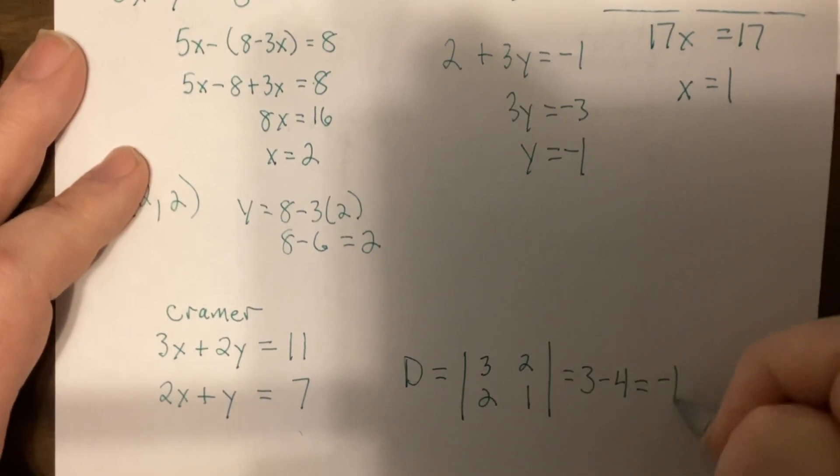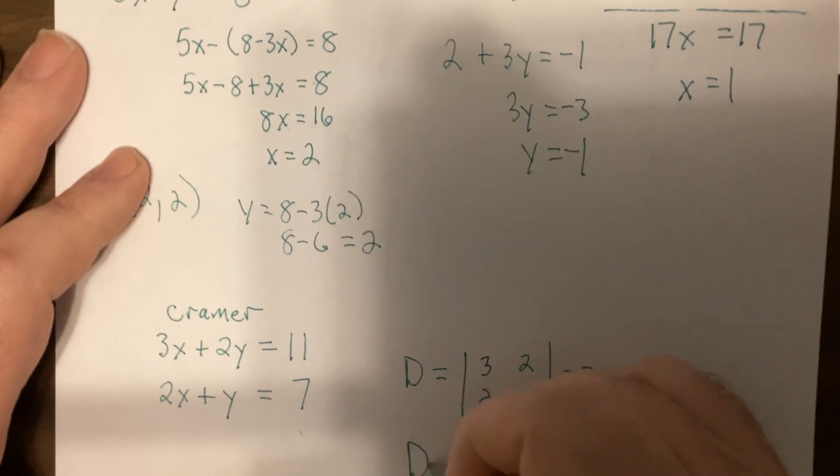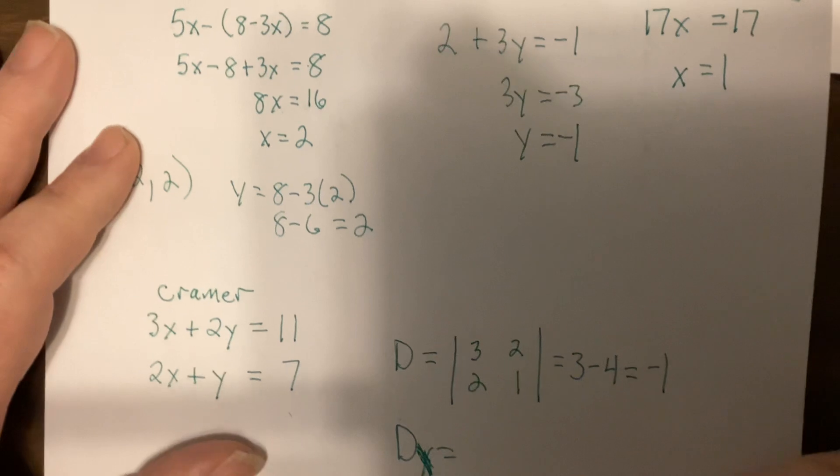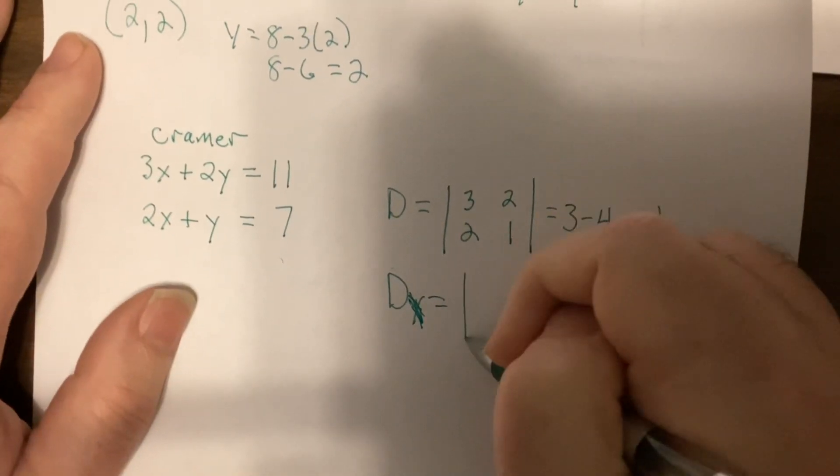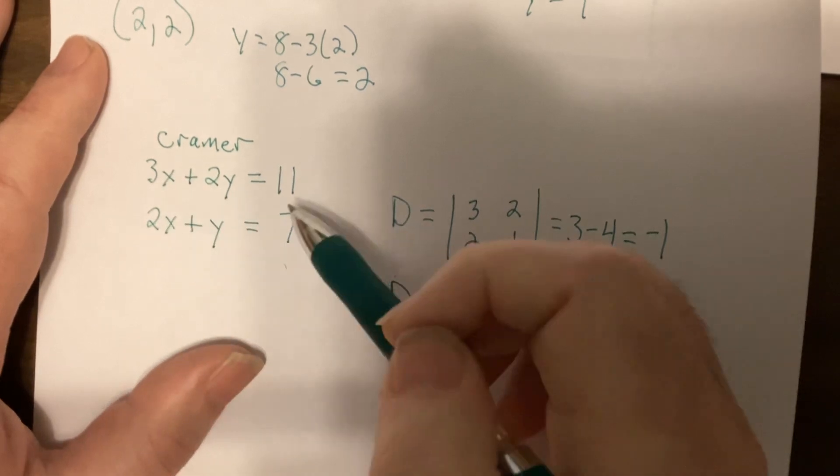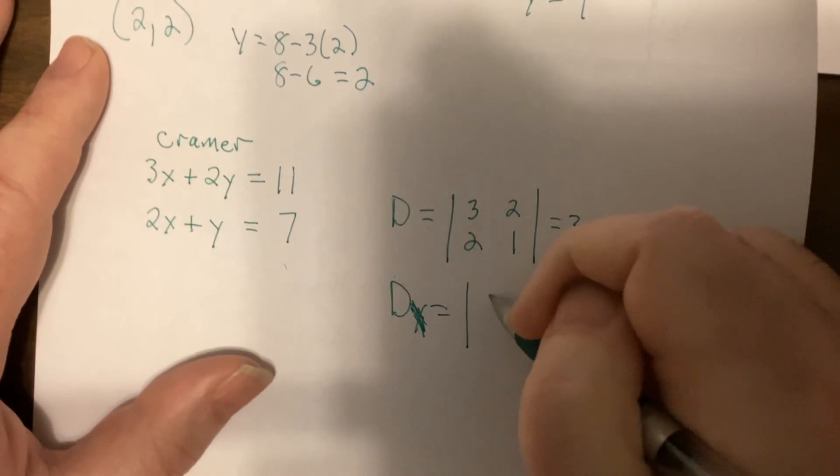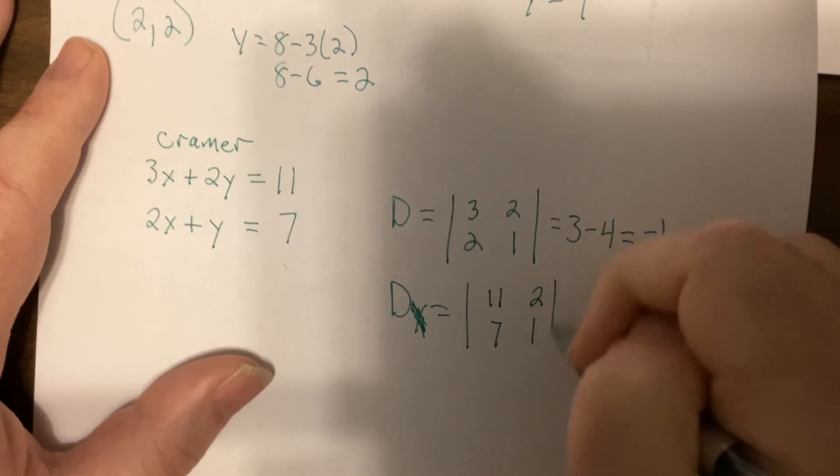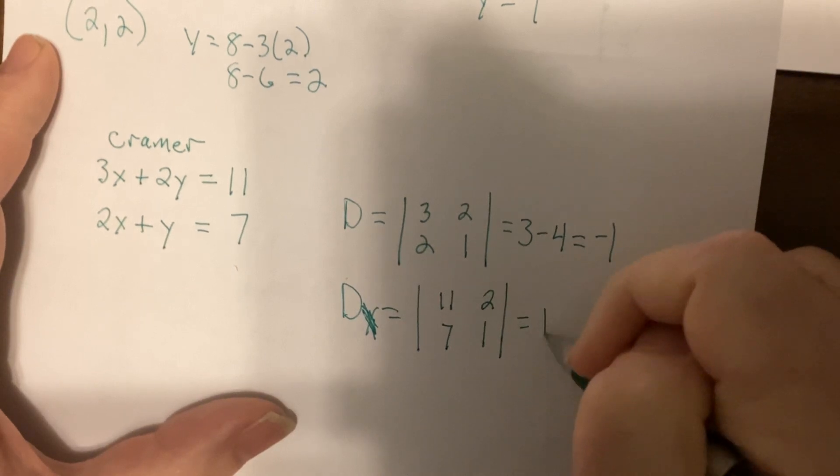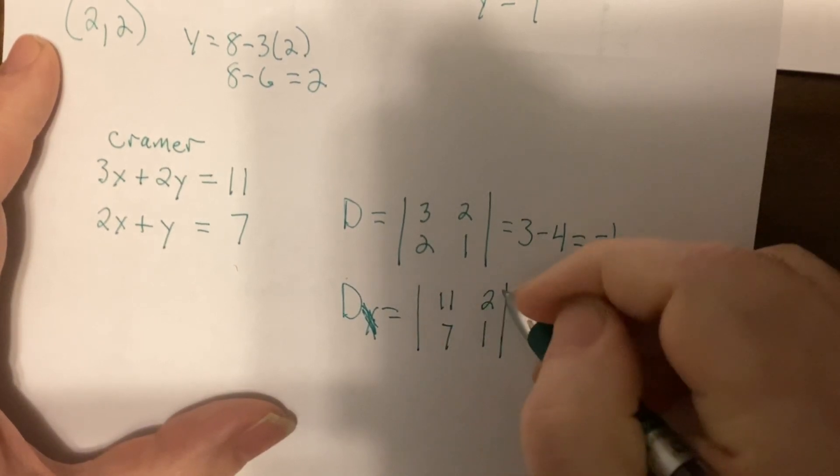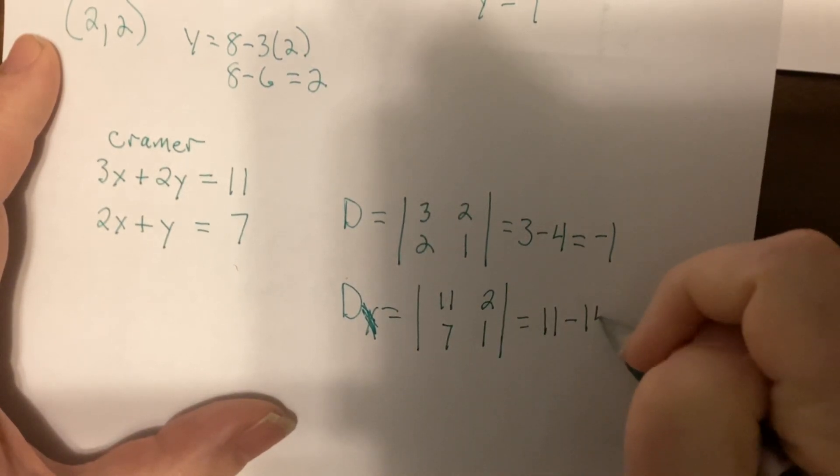Then we find Dx. That's a horrible x, isn't it? Dx. You switch the coefficients of x with the constants. So it'd be 11, 7, then you put in the coefficients of y. So it'd be 11 minus 14, which is negative 3.